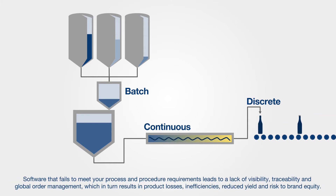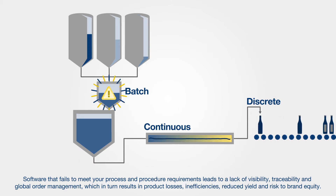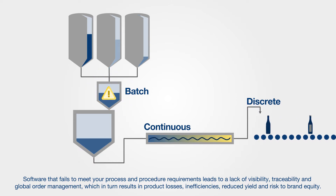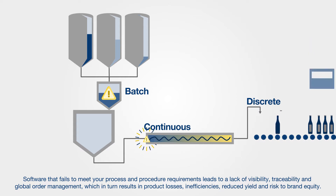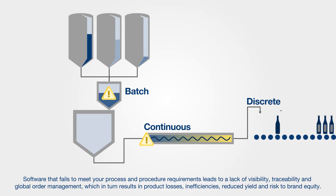Software that fails to meet your process and procedure requirements leads to a lack of visibility, traceability and global order management, which in turn results in product losses, inefficiencies, reduced yield and risk to brand equity.